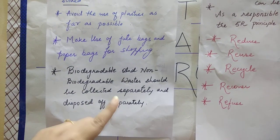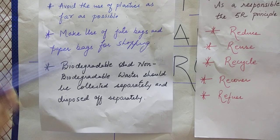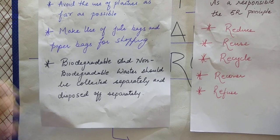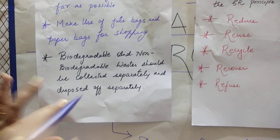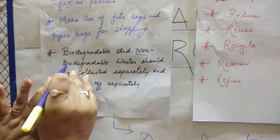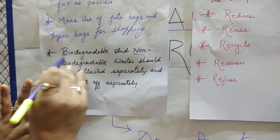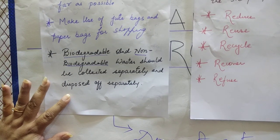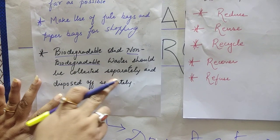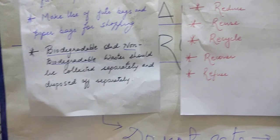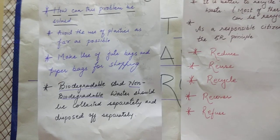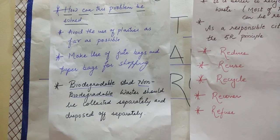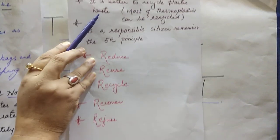Make use of jute bags and paper bags for shopping. Separate biodegradable and non-biodegradable waste from your home. There are two bins: blue color bins for non-biodegradable waste and green color bins for biodegradable waste. They should be collected and disposed of separately so it will not support environmental pollution.